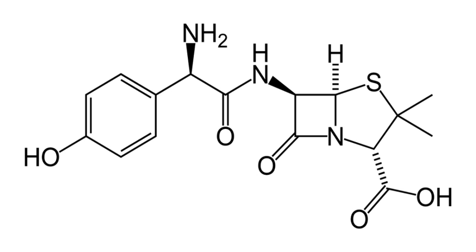This is a list of common beta-lactam antibiotics, both administered drugs and those not in clinical use, organized by structural class. Antibiotics are listed alphabetically within their class or subclass by their non-proprietary name. If an antibiotic is a combination drug, both ingredients will be listed.